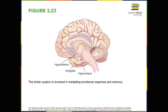The limbic system is made up of a number of different structures, but three of the most important are the hippocampus, the amygdala, and the hypothalamus, as shown in figure 3.23. The hippocampus is an essential structure for learning and memory. The amygdala is involved in our experience of emotion and in tying emotional meaning to our memories. The hypothalamus regulates a number of homeostatic processes, including the regulation of body temperature, appetite, and blood pressure. The hypothalamus also serves as an interface between the nervous system and the endocrine system, and in the regulation of sexual motivation and behavior.